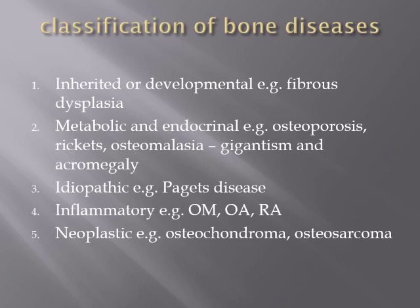Acromegaly occurs when growth hormone increases above normal after puberty, when the growing bone ends are already closed. It can also occur in fitness trainees and weightlifters who take anabolics, because anabolics can mimic or supply growth hormone effects, but since the long bones are closed, they won't grow taller — instead, they develop acromegaly facies.